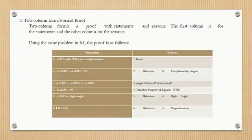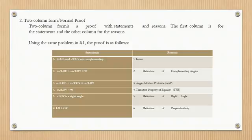In the two-column proof, the first column is for statements and the other column is for reasons. Using the same problem: Statement 1 — Angle LOE and angle EOV are complementary; Reason: Given. Statement 2 — The measurement of angle LOE plus measurement of angle EOV equals 90 degrees; Reason: Definition of complementary angles.